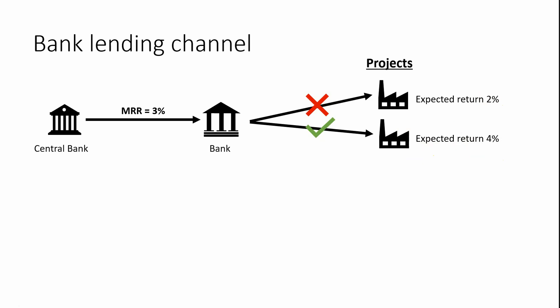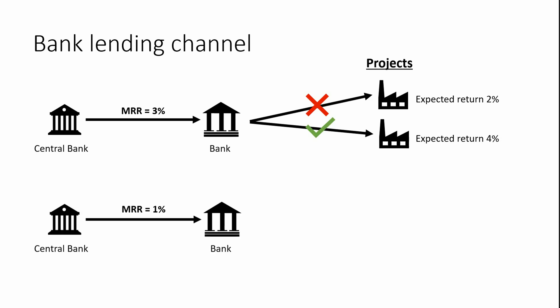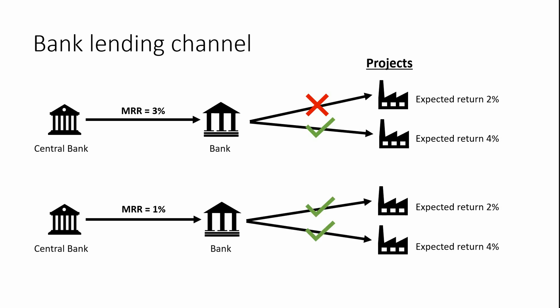Now, what happens if the central bank lowers the main refinancing rate to 1%? If the bank then extends loans at 1.5% instead of 3.5%, both projects become profitable. Not only Firm 2 invests, but Firm 1 also invests. So we have more investments, which leads to more consumption, higher wages, higher GDP, and also higher inflation. This is, very stylized, how standard expansionary monetary policy works — this is the bank lending channel. There are other channels of monetary policy, but this is the main one.